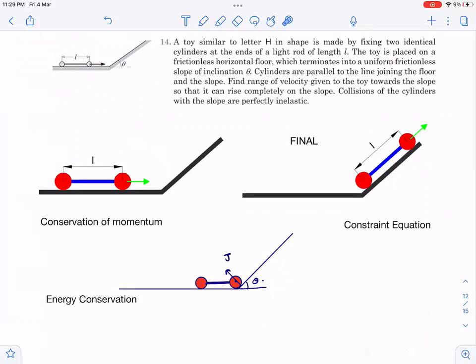After understanding these concepts, let's go to the question. This is the initial position, this is the intermediate position when the cylinder collides with the slope, and this is the final position. Initially velocity is v₀, which we need to find. I'm going to find the minimum v₀ so that it is just able to reach the final position.